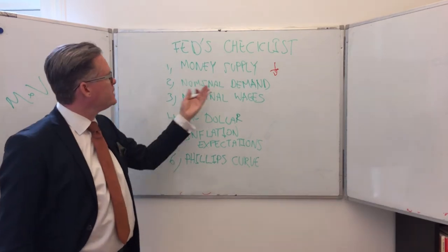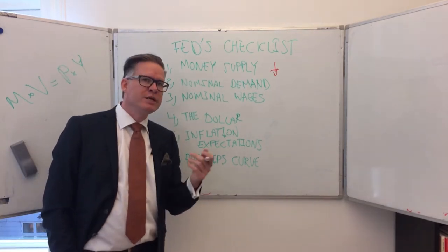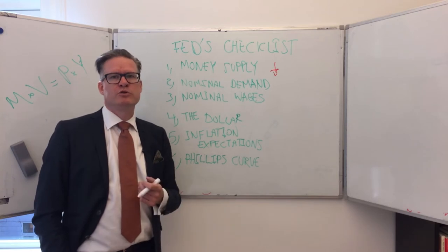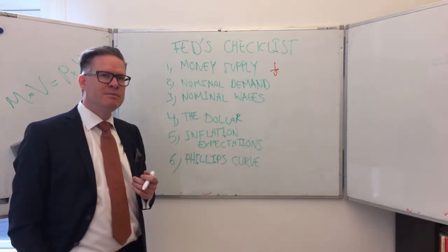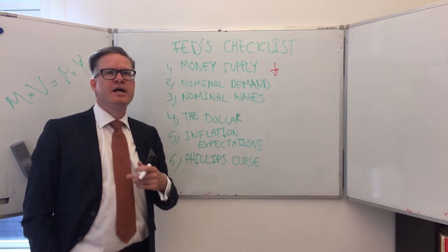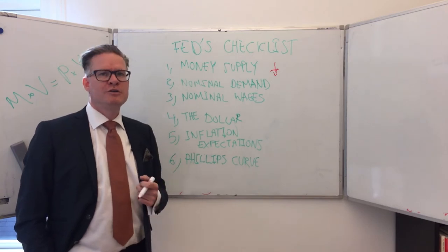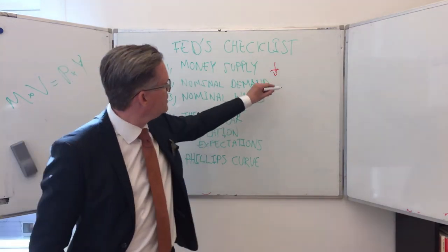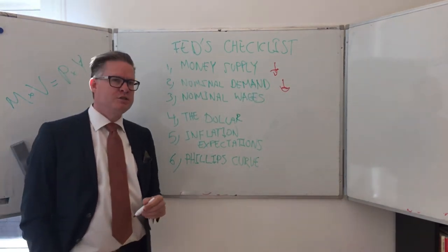How about looking at nominal demand — aggregate nominal demand in the economy? A way to look at this is private consumption expenditure, or nominal GDP growth. Here again the story is the same: nominal GDP and nominal private expenditures are growing around 1 percentage point too slow to achieve the 2% inflation target. So again, downside risk on inflation.